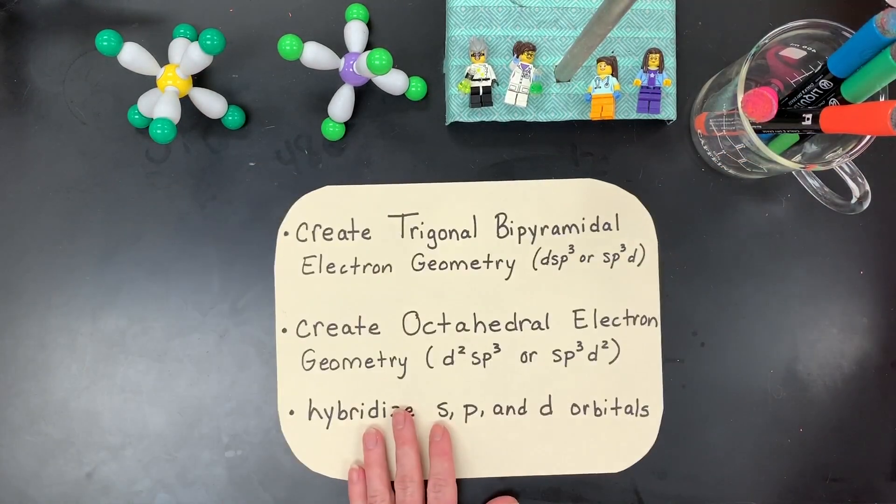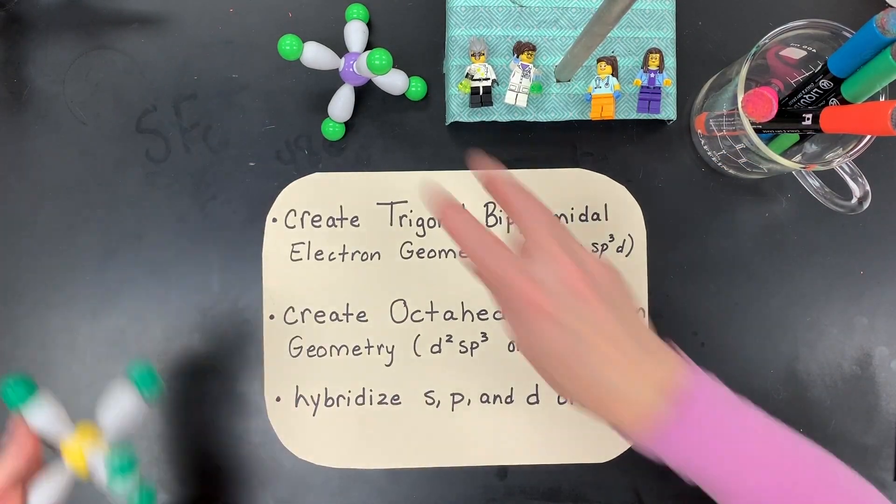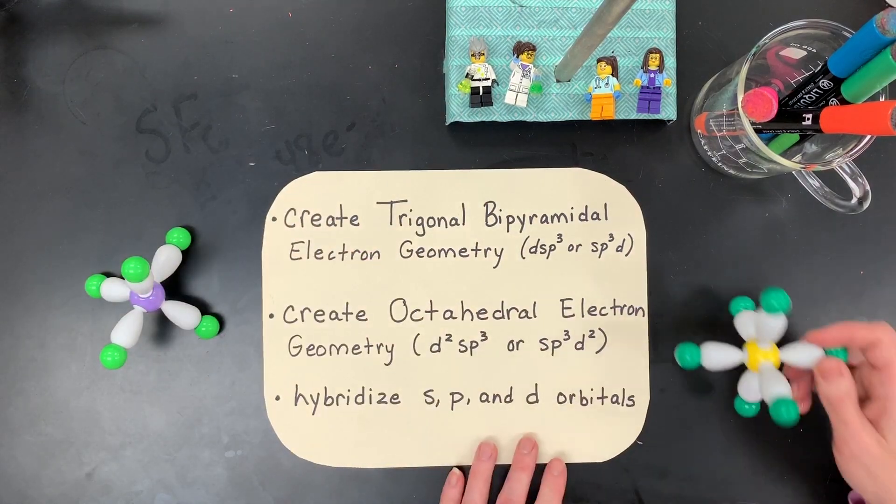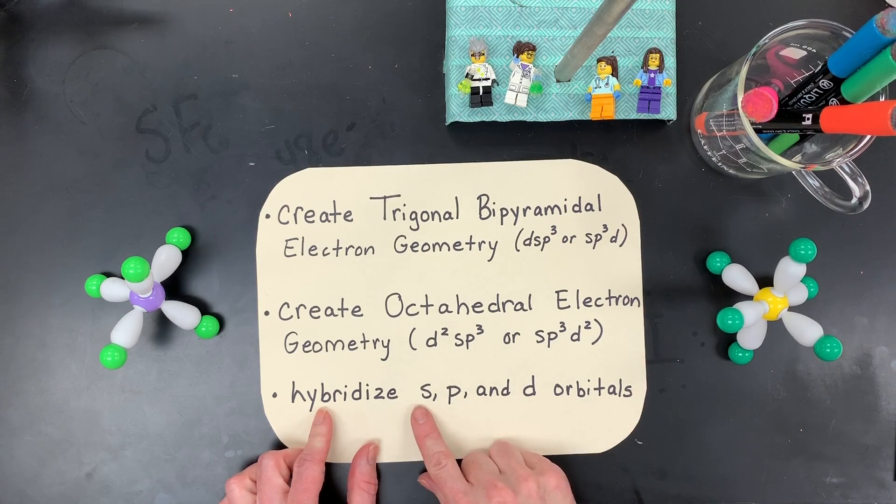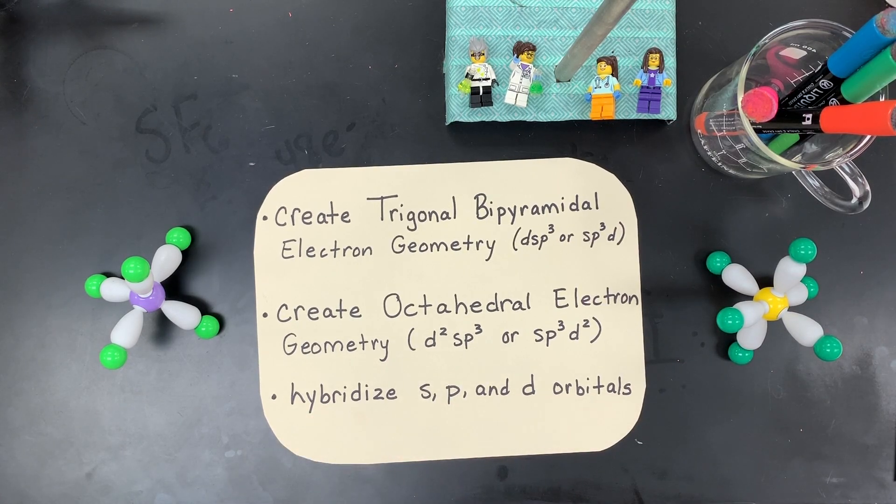Last but not least, they create trigonal bipyramidal electron geometries. That's this one. They also create octahedral geometries. That's this one. The center atom hybridizes its sp and d orbitals to make these shapes.